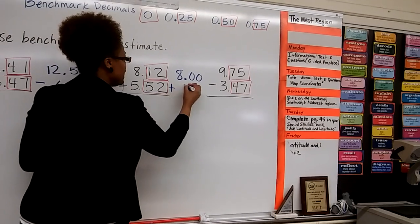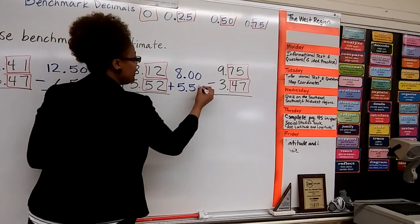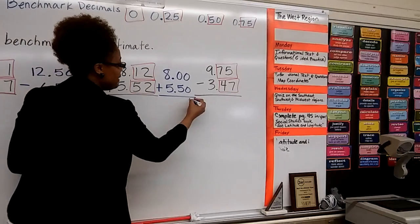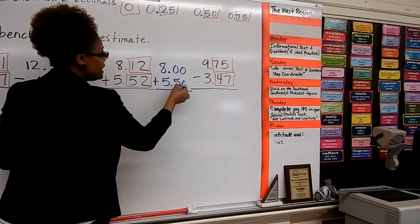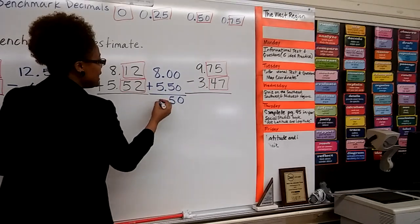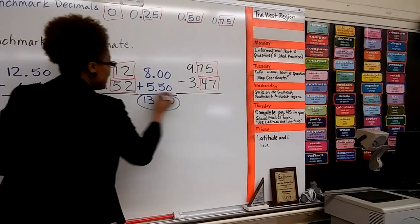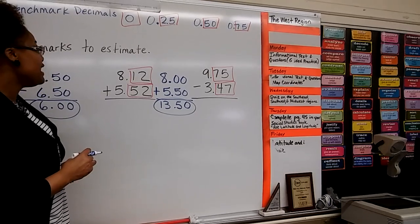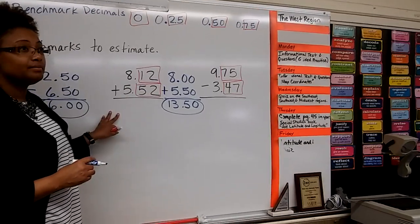And we're adding, so we put plus 5 and 50 hundredths. Don't forget we're adding, so we add the hundreds, we get zero. If we add the tenths, we get five. If we add the ones, we get 13. Raise your head, you got 13 and 50 hundredths. All right? But did this help? Yes.